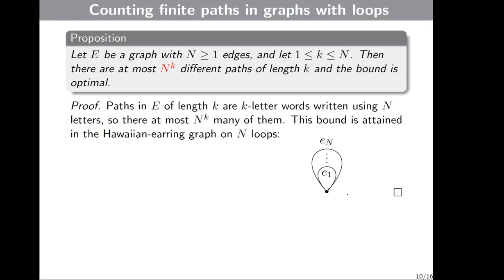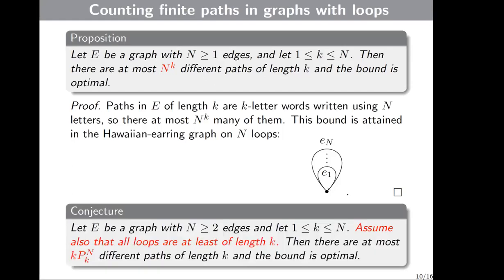This bound is attained in the Hawaiian earring graph on N loops. We also have a conjecture similar to the previous theorem: given graph E with N greater or equal to 1 edges and K between 1 and N, assuming loops of length at least K, then there are at most K·P(N,K) different paths of length K, and the bound is optimal. In today's talk I will prove the special case when K is greater than N minus K.